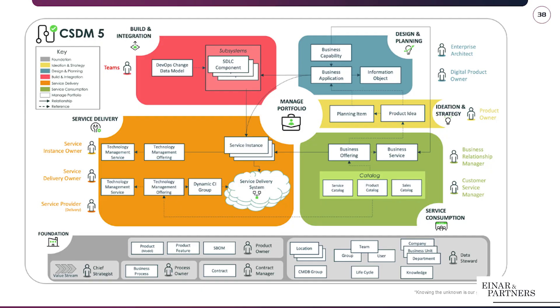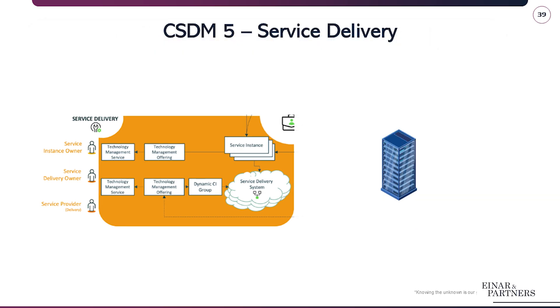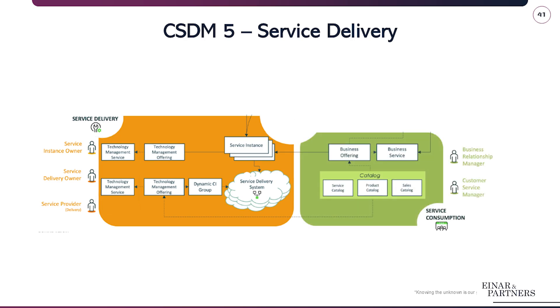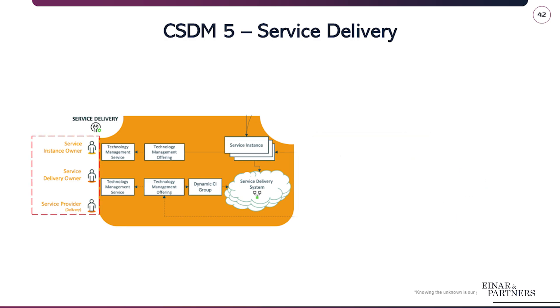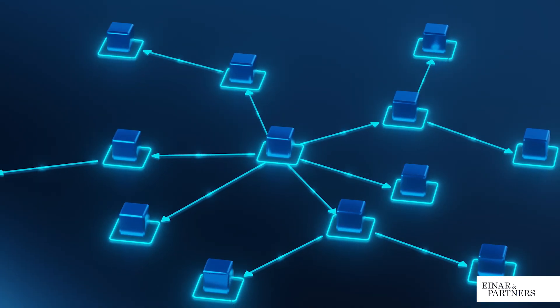The previously known domain as managed technical services has been renamed to service delivery, along with some other label changes. The term technical service has been renamed to technology management service. This better reflects its purpose — managing and delivering technical capabilities to support broader business and digital services, not just isolated infrastructure components. It's a naming shift that clarifies ownership and operational responsibility. Alongside these changes, configuration items or CIs are no longer treated as isolated components; they are now part of the service delivery system or network — the interconnected web of infrastructure and CIs that work together to deliver a service.